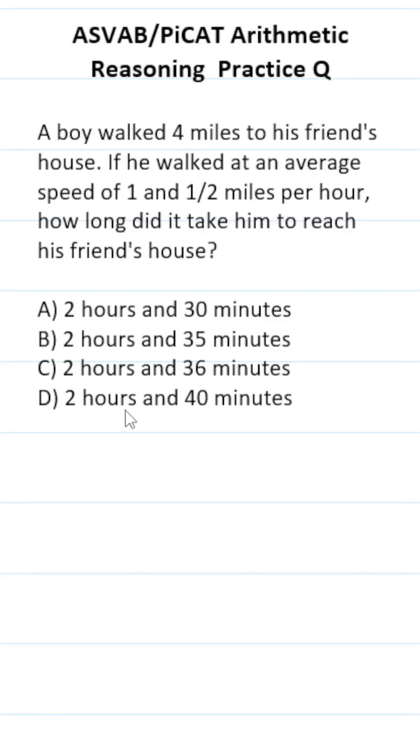For this ASVAB PiCAT arithmetic reasoning practice test question, we need the distance formula. We know the boy walked 4 miles at a rate of a mile and a half per hour. We want to figure out how long that took, so we're going to be solving for t.